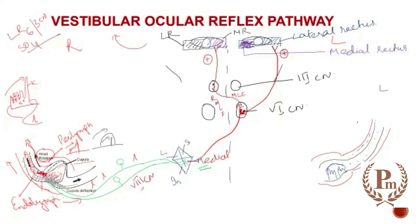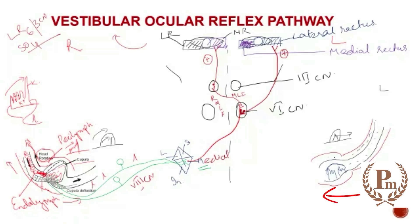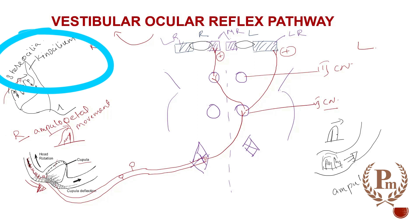On the left side, the stereocilia movement is away from the kinocilium. When rotating the head to the right, on the right side the endolymph moves towards the left — ampullopetal movement. On the left side, the fluid movement is away from the ampulla — ampullofugal movement. Here, since the stereocilia movement is away from the kinocilium, there is hyperpolarization, meaning inhibition of the left semicircular canal afferents.